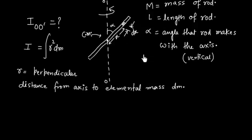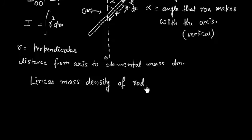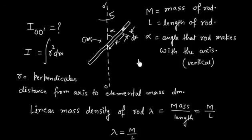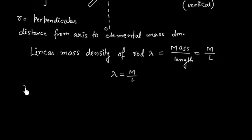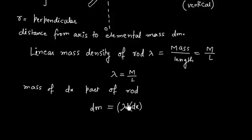We can calculate the linear mass density of the rod, lambda, which is equal to mass divided by length, so lambda equals M by L. The mass of the dx part of the rod, which we call dm, is equal to linear mass density times length, so dm is equal to lambda times dx.